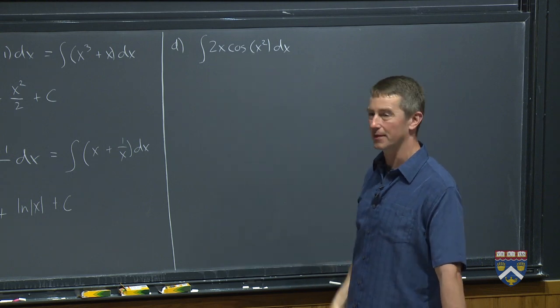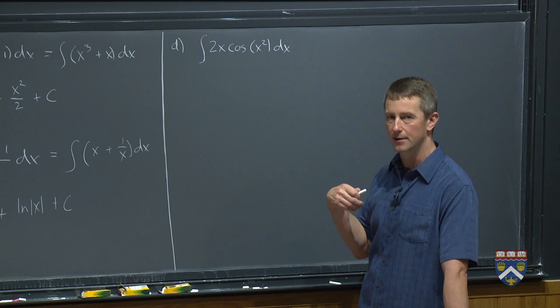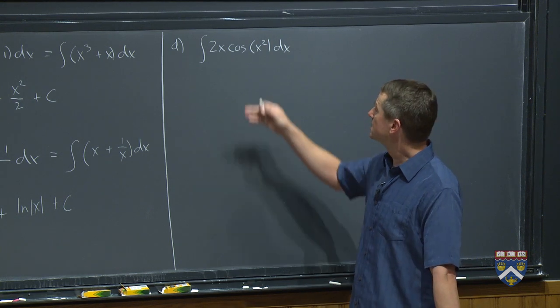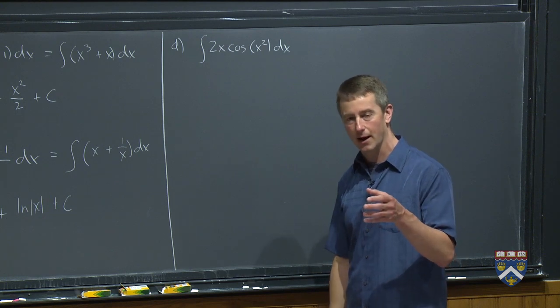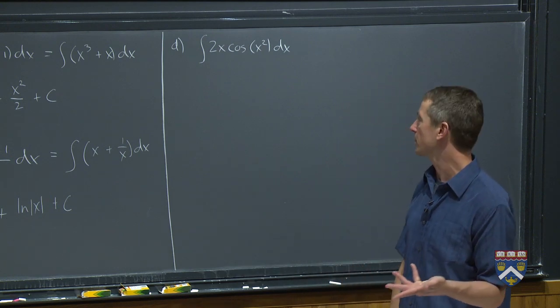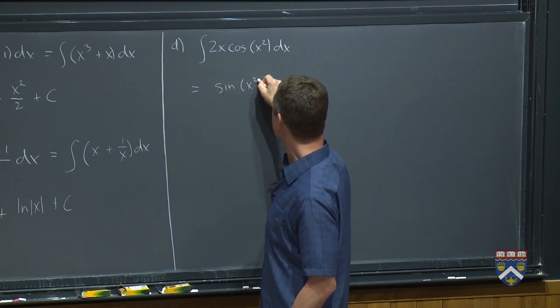But do you recognize where this function might have come from? What was this function before you took its derivative? You've got a cosine of something other than x. So you should be thinking what rule there, chain rule, right? So what would have given you a cosine of x squared? You would have had to start with a sine of x squared. And so let's just take that as a guess, sine of x squared.